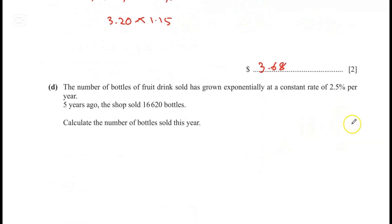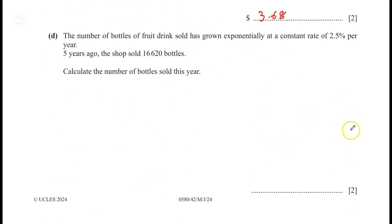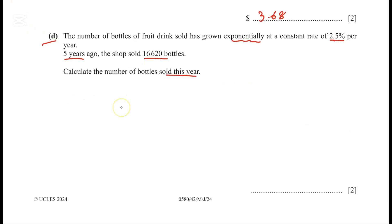Question D. The number of bottles sold has grown exponentially at a constant rate of 2.5% per year. Five years ago the shop sold 16,620 bottles. Calculate the number of bottles sold this year. Let's use the compound interest formula.